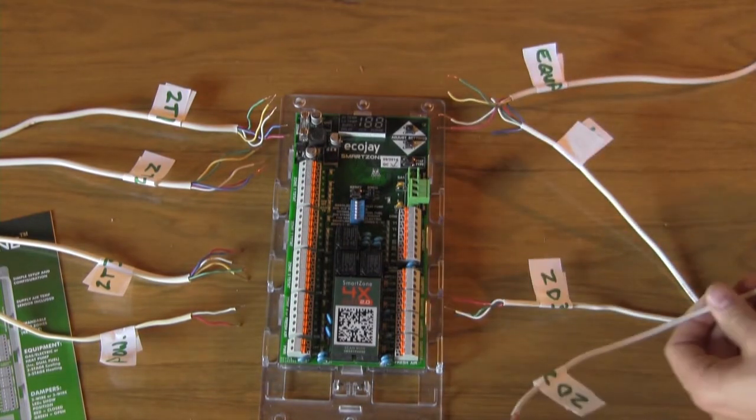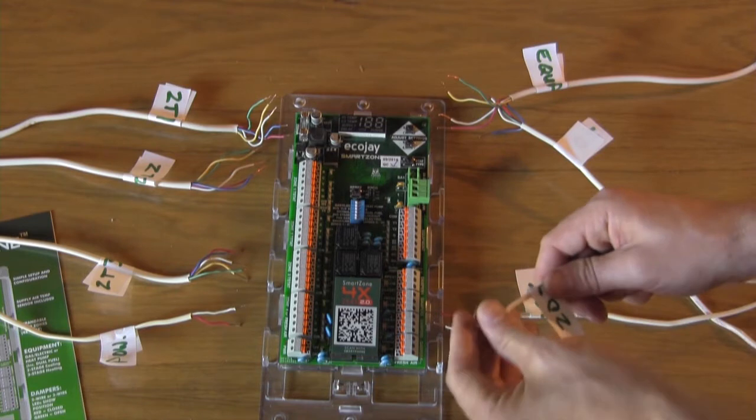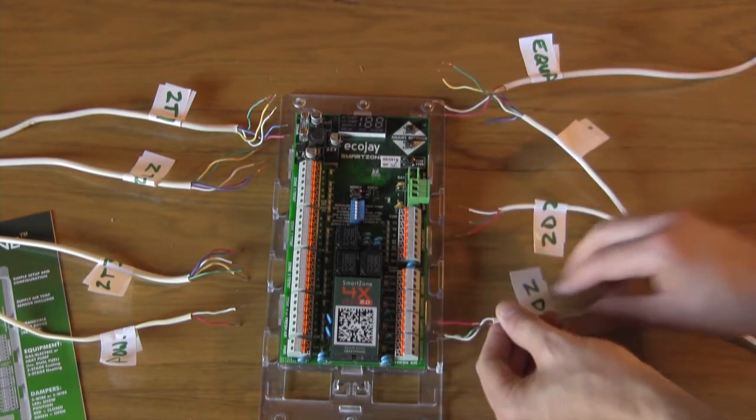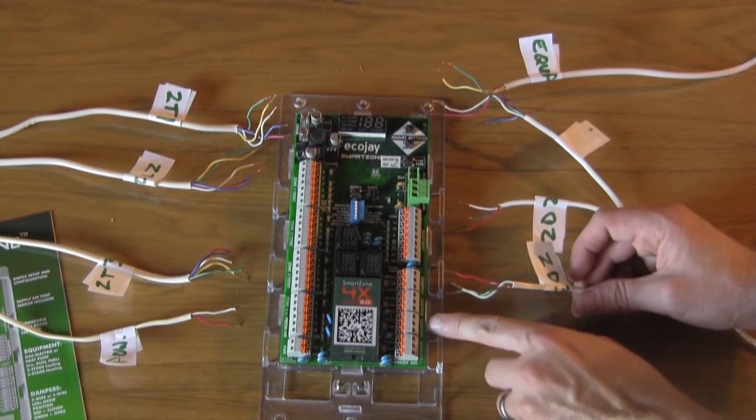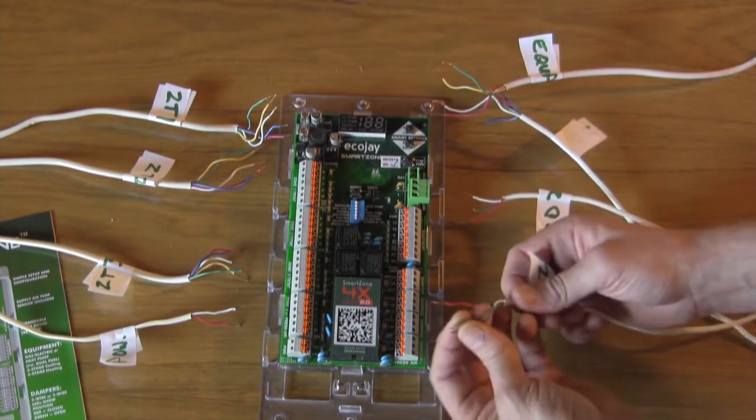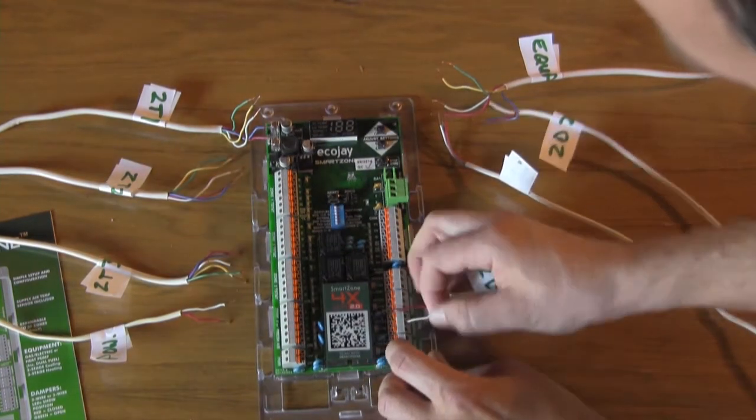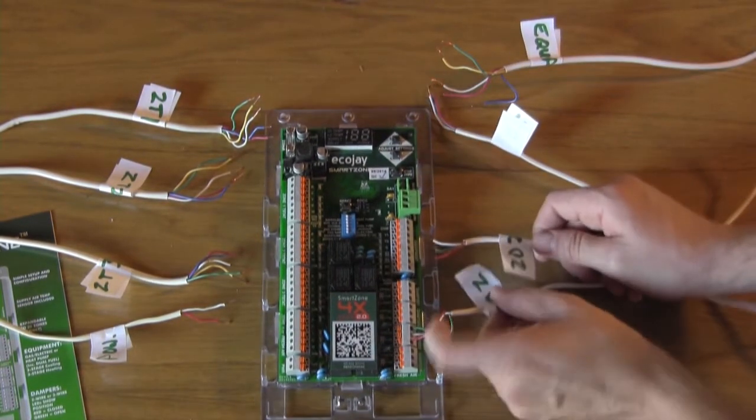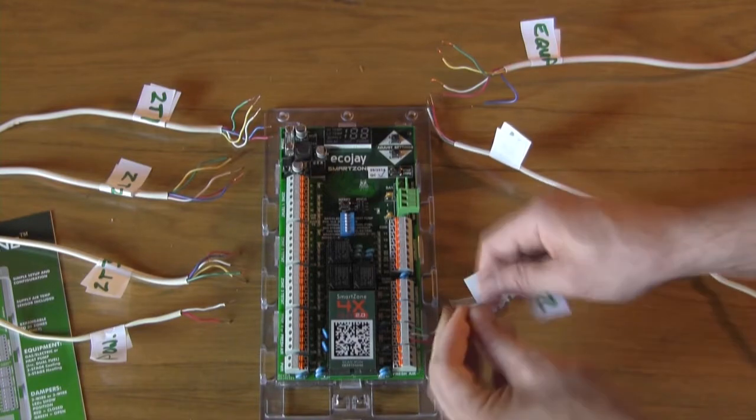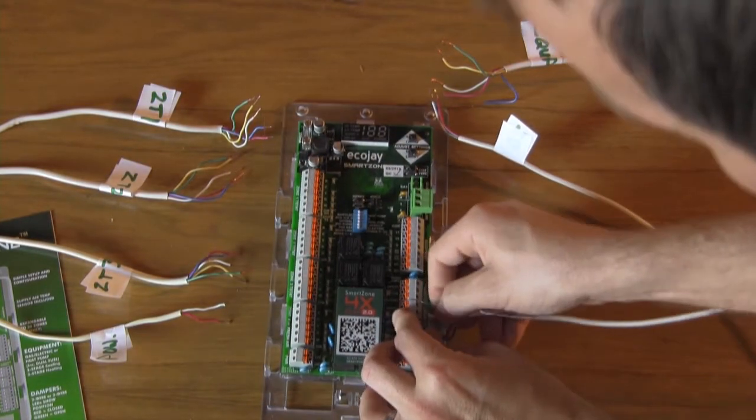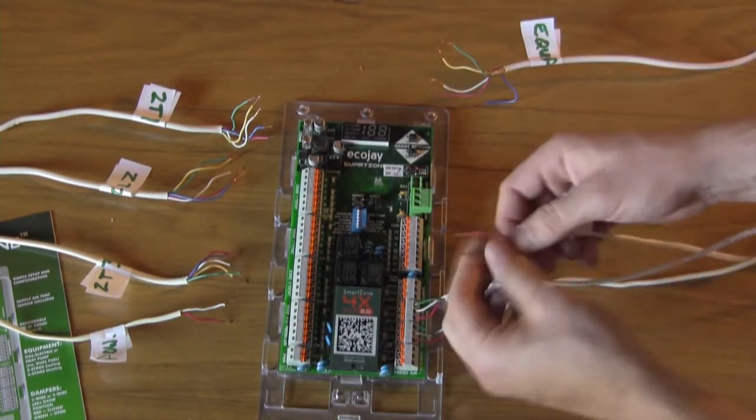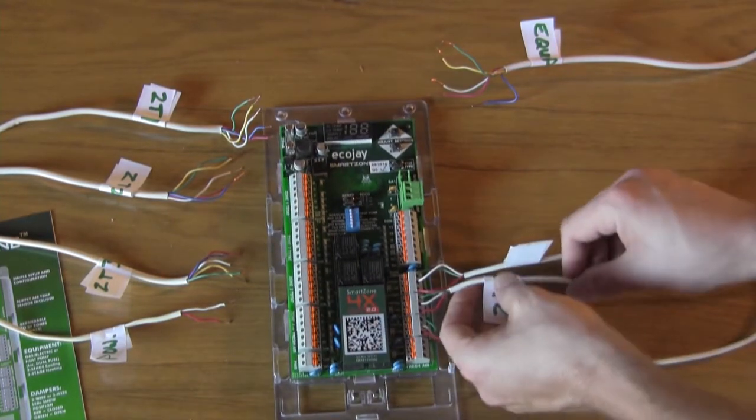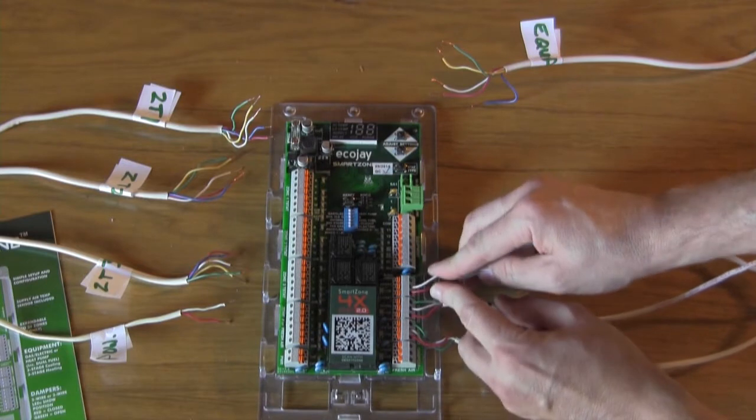You can begin connecting the damper wires first. We'll start with zone three damper labeled on the board as damper three here. Next, zone damper two. Now we have the zone dampers wired up.